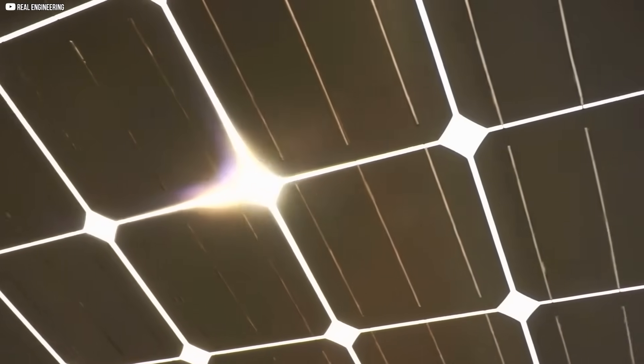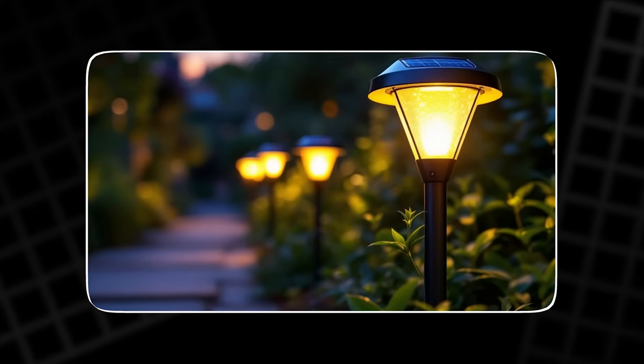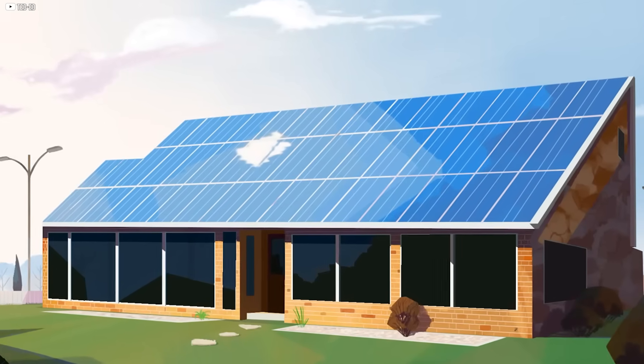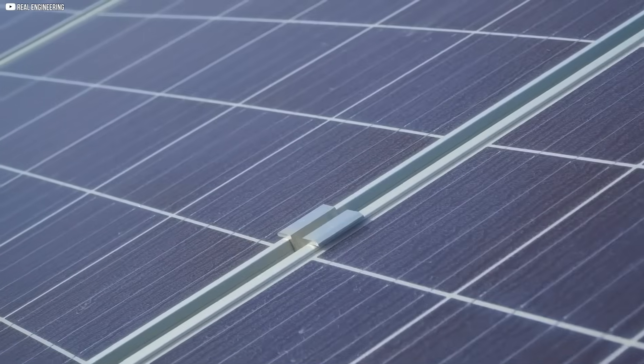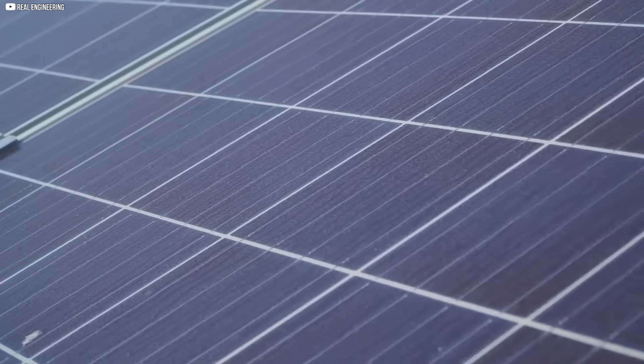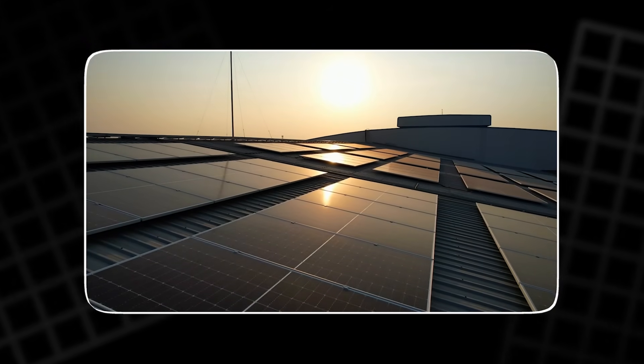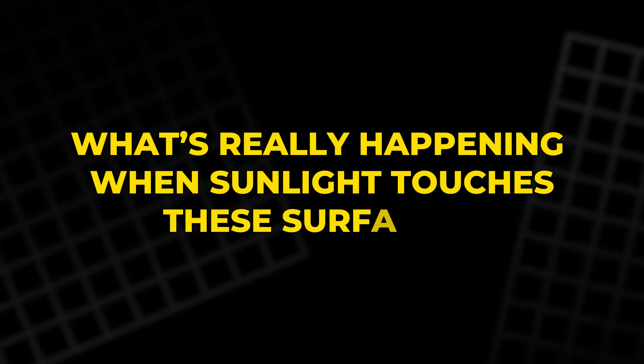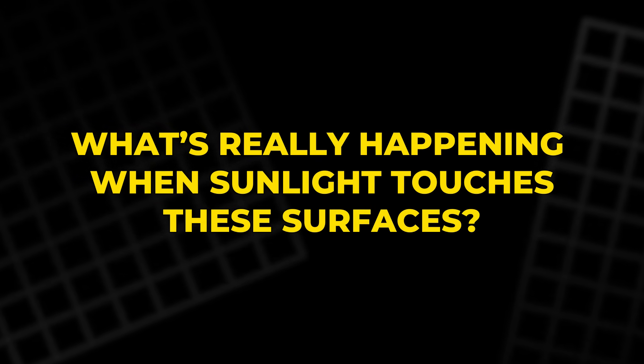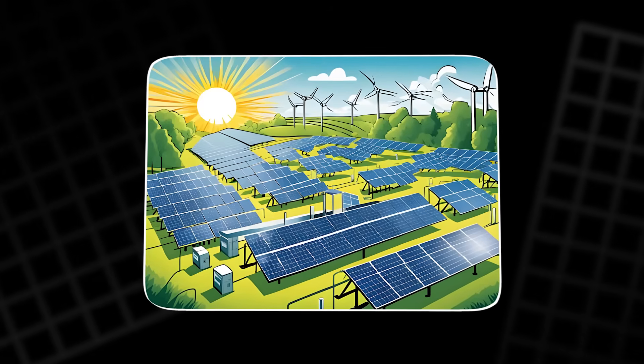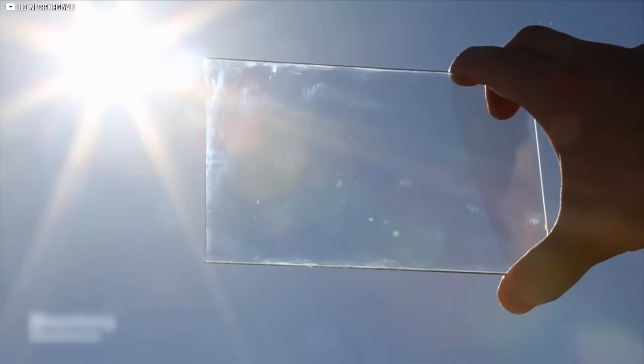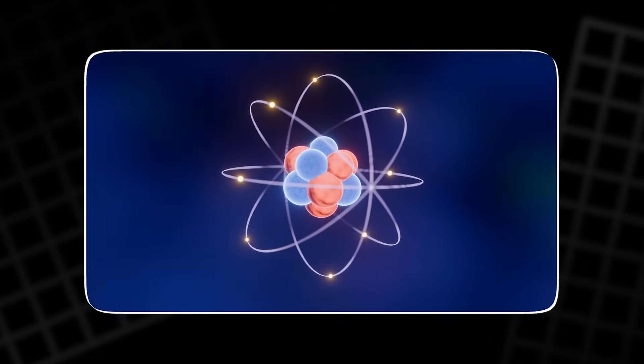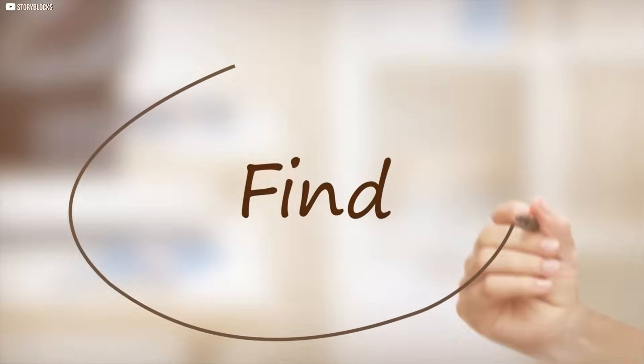This starts with something most of us take for granted. The glow of a garden light at dusk. A calculator screen waking up under a classroom lamp. The silent, effortless power behind a rooftop solar array. But look closer and you'll notice something strange. Some solar panels shimmer with visible crystals, while others stay dark, smooth, and glassy. Why? What's really happening when sunlight touches these surfaces? How does something as soft as light become hard electrical energy? And more surprisingly, can a solar panel emit light back? The answers lie deep inside the silicon and the physics of photons and electrons. Let's find out.